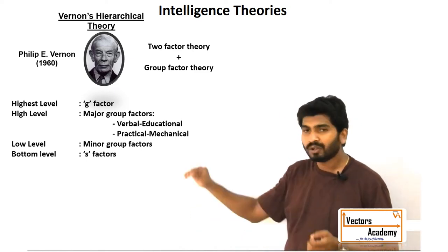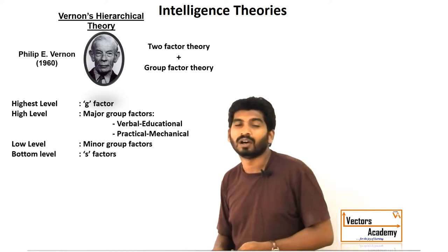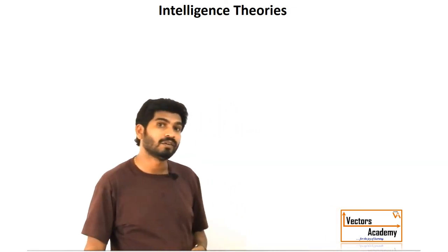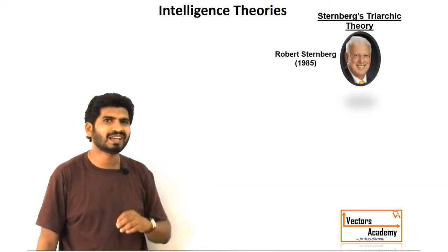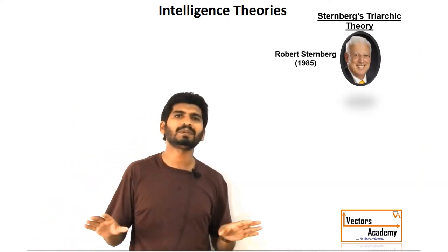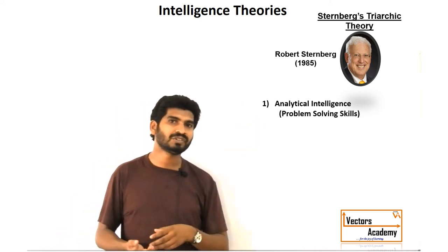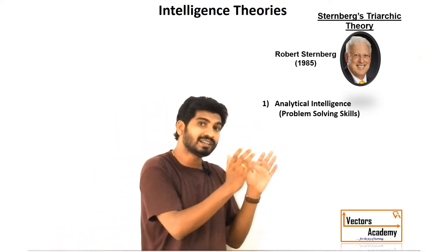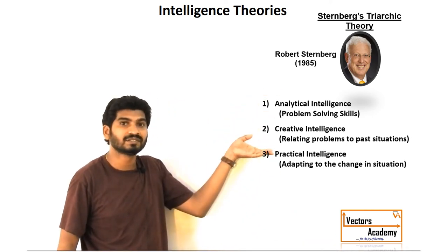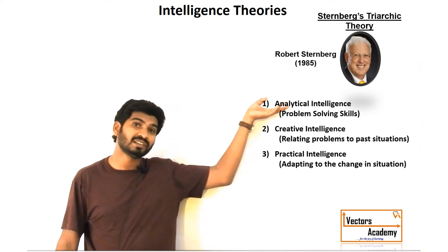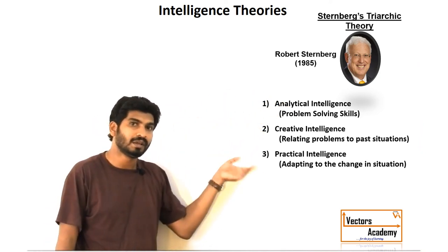Vernon's theory was not a new discovery — it was just a mixture of the two theories. In 1985, Sternberg wiped out all these and made a simple classification for intelligence. Instead of measuring intelligence as a single term, he measured it in three different categories: the first being analytical intelligence, the second being creative intelligence, and the third being practical intelligence.